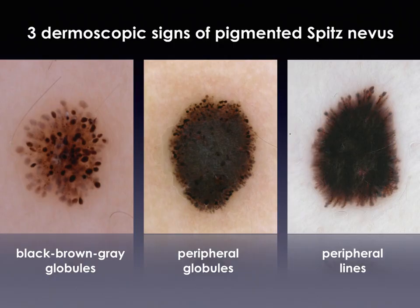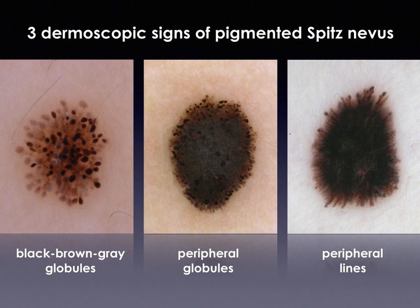To summarize how to diagnose and manage Spitz nevi: there are three dermoscopic signs of pigmented Spitz nevi — black, brown, and gray globules; peripheral globules; and peripheral lines. Dermoscopically asymmetric lesions with spitzoid features should be excised to rule out melanoma, and spitzoid lesions should be managed according to the age of the patient. The most important rule is to excise all spitzoid lesions after puberty.